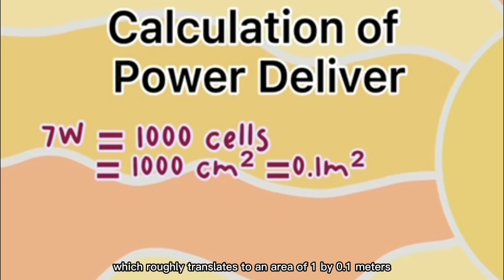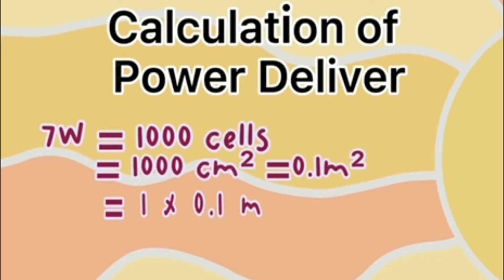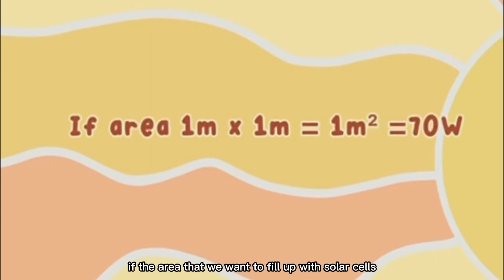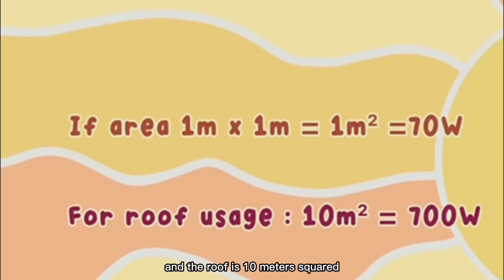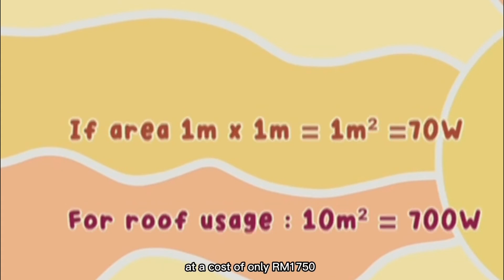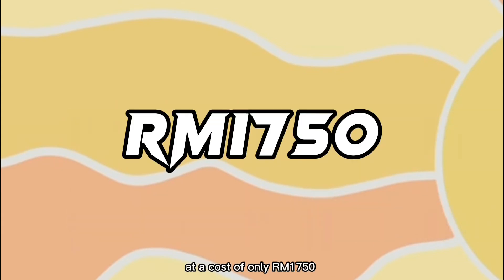If the area that we want to fill up with solar cells is 1 by 1 meters, which is equivalent to 1 meter squared, it will give out a power of 70 watts. If we want to use it on a roof and the roof is 10 meters squared, the DSSC will give an output power of 700 watts, which is enough for daily life. The estimated cost for a 1 meter squared DSSC is about 175 ringgit. This means that we can deliver a power of 700 watts for a long period of time at a cost of only 1,750 ringgit.